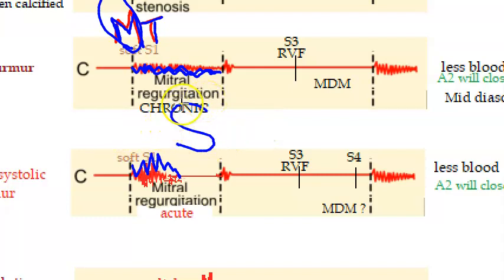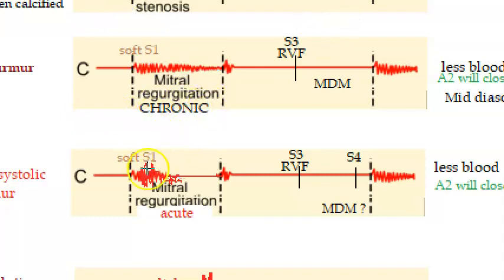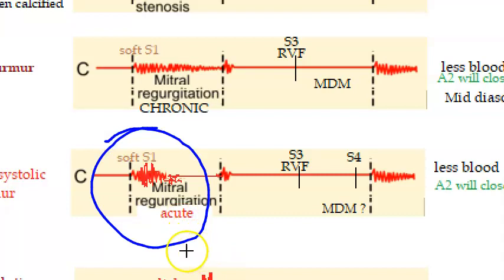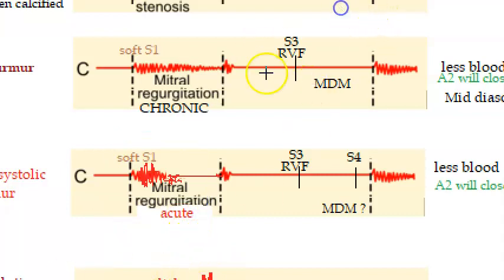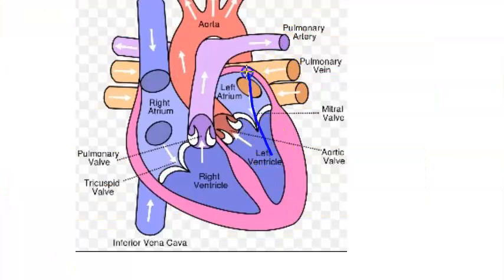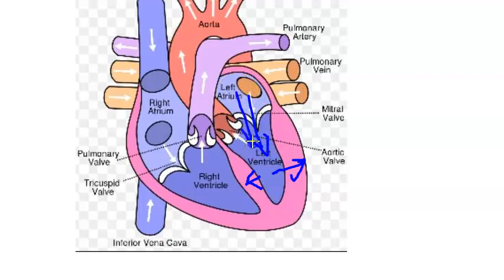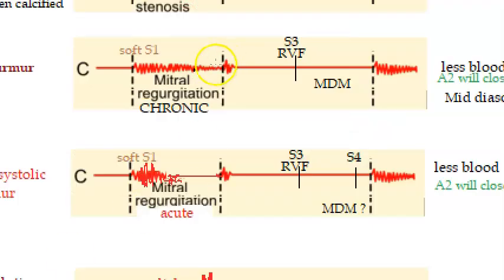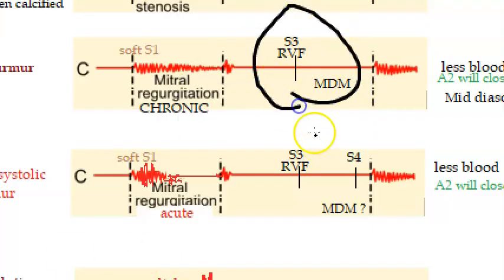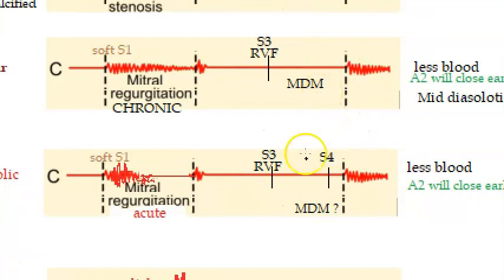You will see pan-systolic murmur in chronic mitral regurgitation and early systolic murmur in acute mitral regurgitation. Because blood has gone back in diastole, the rapid ventricular filling will produce S3. S3 can also be heard in these patients. A mid-diastolic murmur (MDM) can also occur in severe cases.